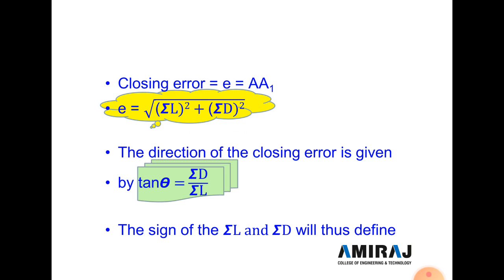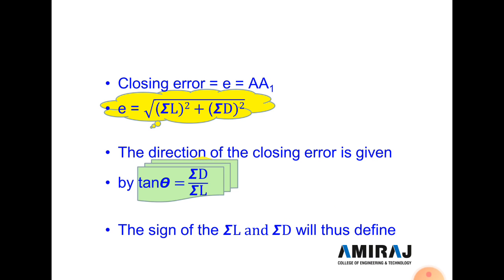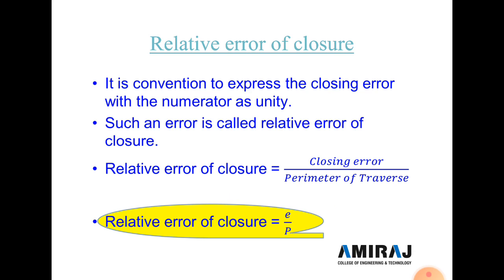The sum of latitude and departure values are given in the example. The direction of the closing error is given by tan θ = ΣD / ΣL. This angle is measured using the sum of departures and sum of latitudes. The sign of the sum of latitude and sum of departure will define the quadrant, and from this we find out the closing error.